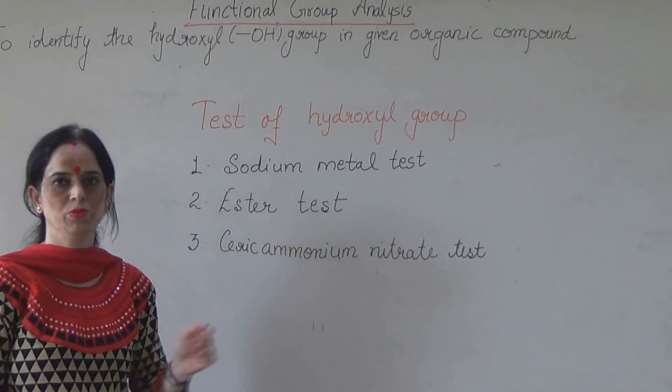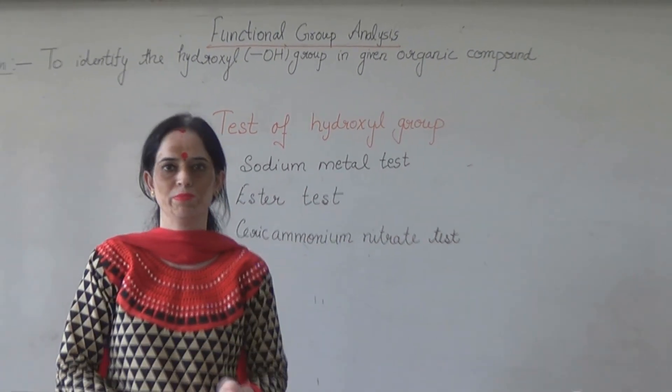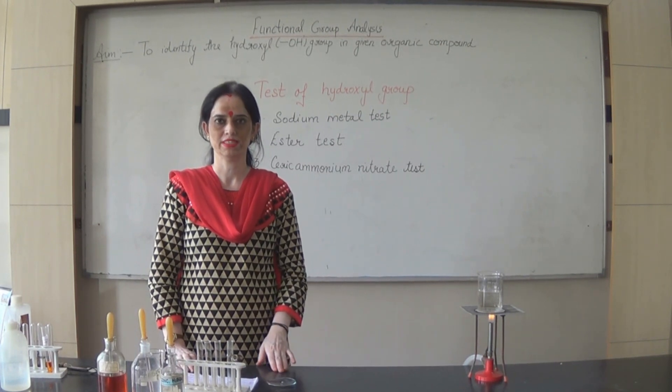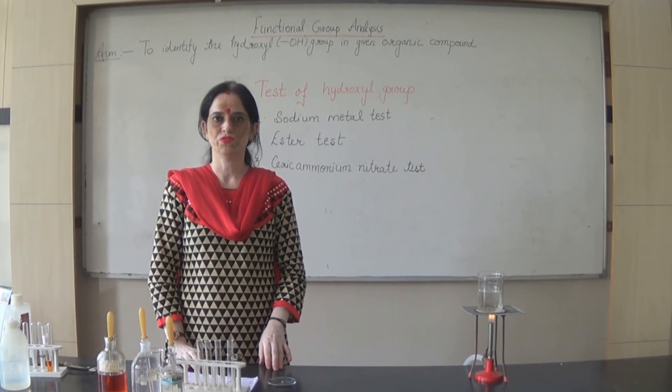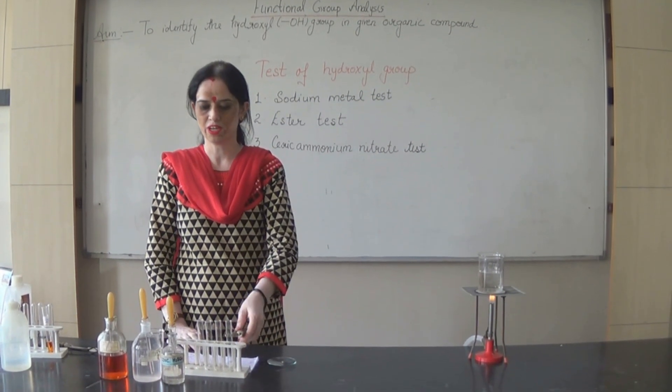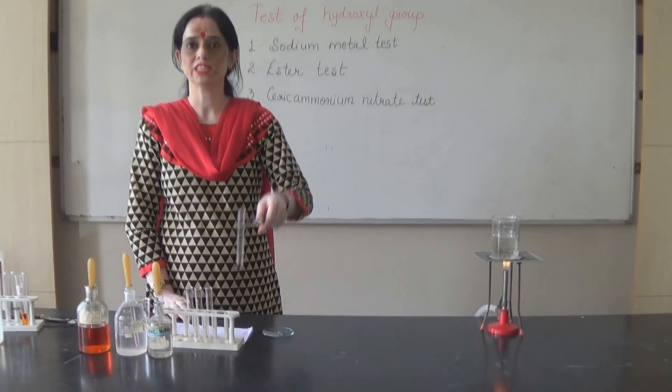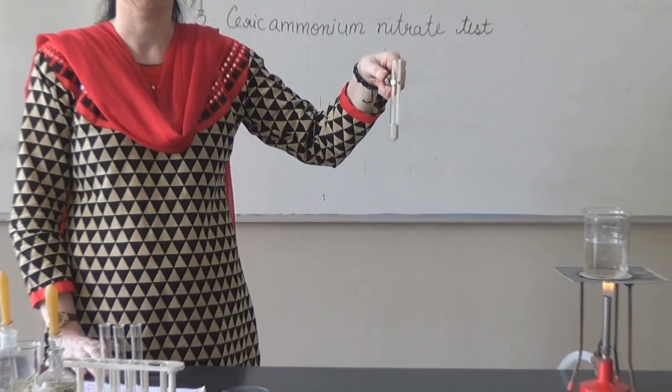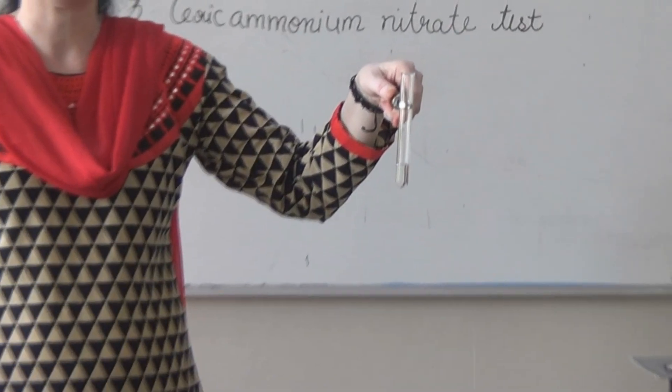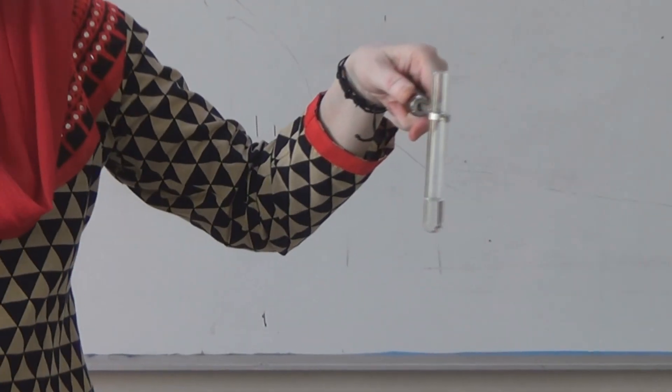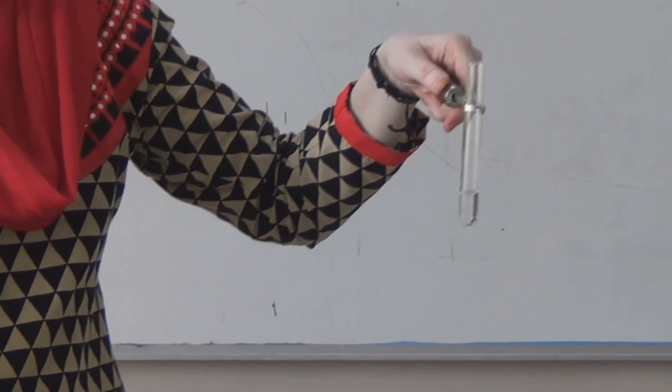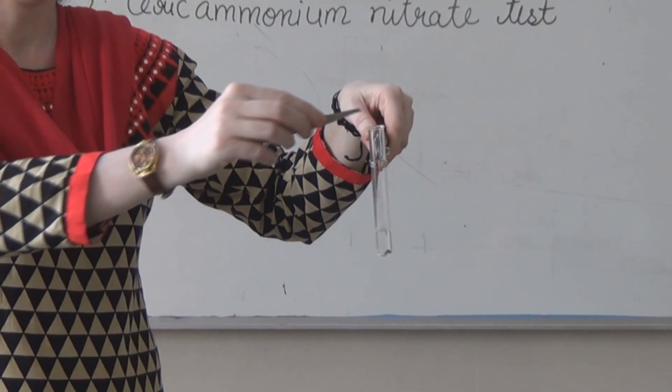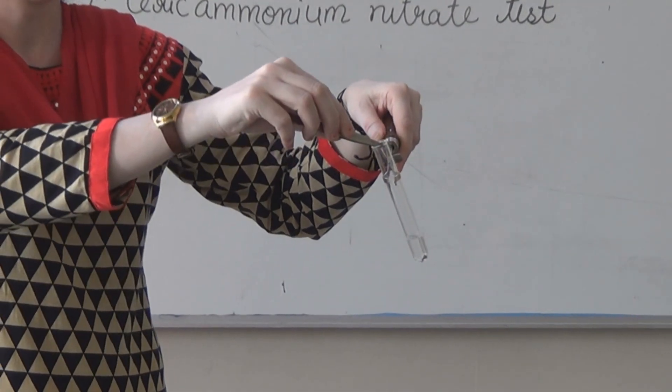Now we are going to perform these experiments one by one. We will proceed for experiment number one, that is sodium metal test. First of all, we are required to have a very small amount of organic compound in the test tube. In sodium metal test, take a dry, very small piece of sodium metal and add it to the organic compound very carefully.